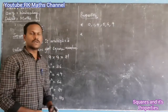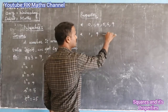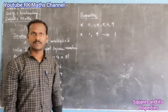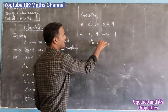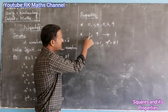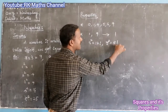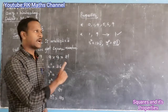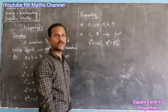Second property: if a number's unit place is 1 or 9, then its square will have unit place 1. For example, 11 squared is 121 — unit place is 1. And 9 squared is 81 — unit place is 1. So if the unit place is 1 or 9, the square's unit place is always 1.